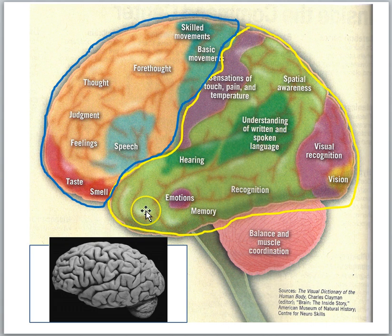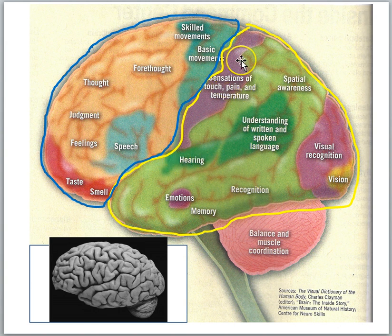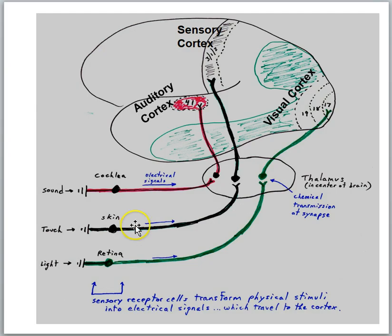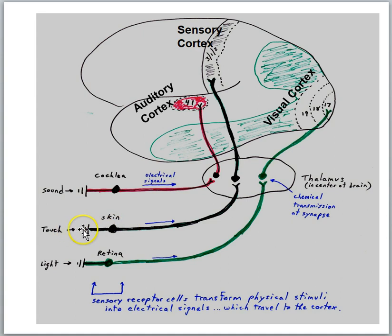The cortex has specialized regions that process different kinds of information due to the inputs to that area. So we have the auditory cortex and the touch cortex, and we might expect that these regions of the brain would be involved in associating a tone with a shock. The auditory cortex is auditory because it's hooked up to the ears, so the tone pathway goes through the thalamus — a brain structure deep in the brain that acts as a relay station. The touch cortex receives inputs from sensory neurons on the skin, so the foot shock would come through this pathway up to the sensory cortex.